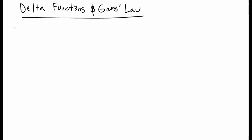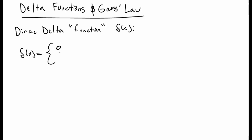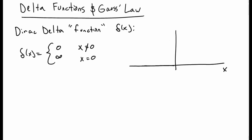Now let's talk about a really important object in physics, the Dirac delta function. The Dirac delta function — or 'function' in quotation marks, because it's not really a function, it's a distribution — is defined to be 0 when x is not equal to 0, and infinity when x is equal to 0. So if you were to draw it, you'd have an infinite spike at x equal to 0, and 0 everywhere else. Very funny function.